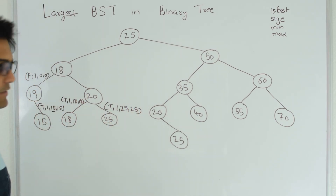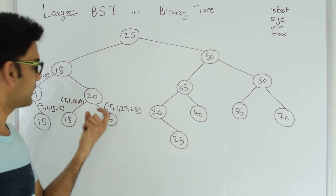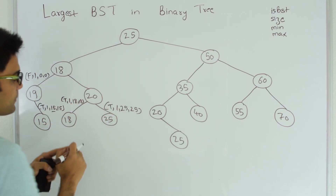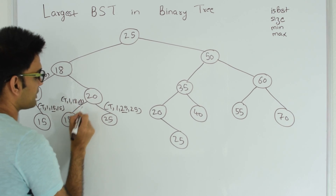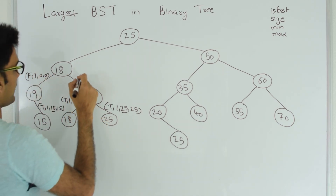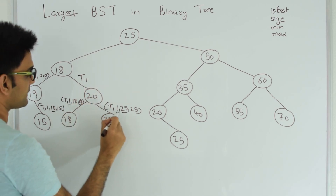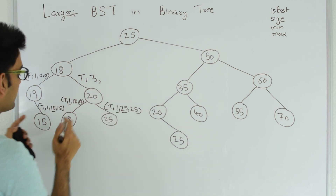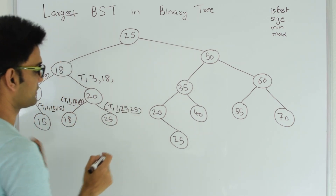Node 20 gets true from both its left and right, meaning both subtrees are binary search trees. Now 20 needs to verify: including 20, does it still remain a BST? The minimum on the right side is 25, which is greater than 20 — good. The maximum on the left subtree is 18, which is less than or equal to 20 — also true. So this subtree continues to be a BST. Node 20 returns: true, size 3, minimum 18, maximum 25.